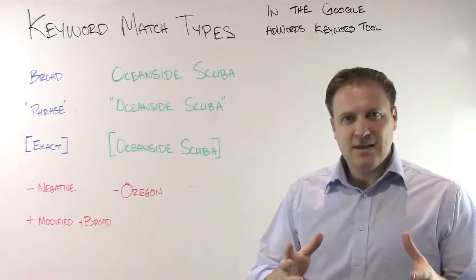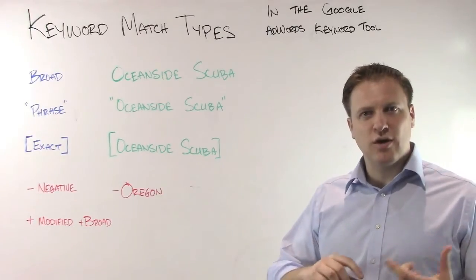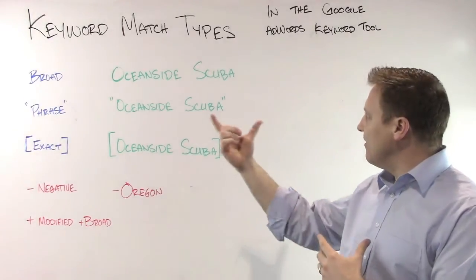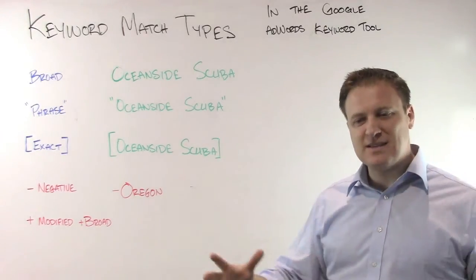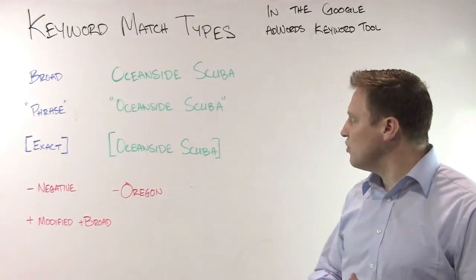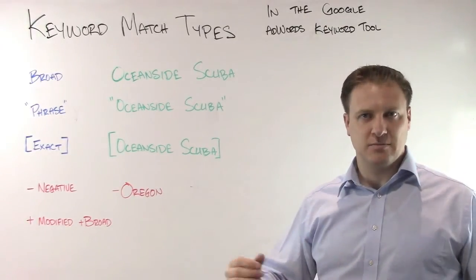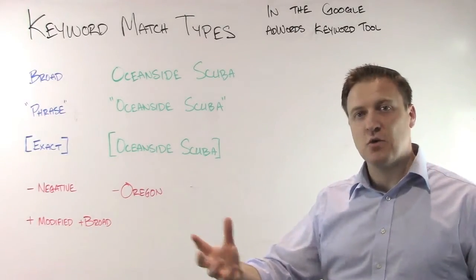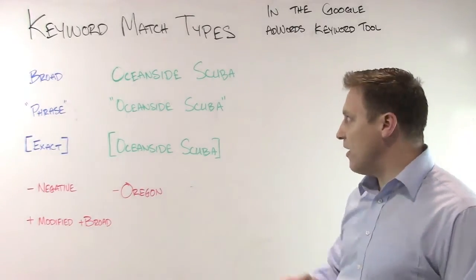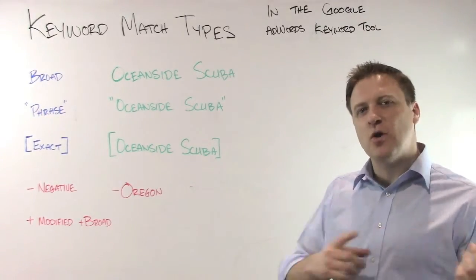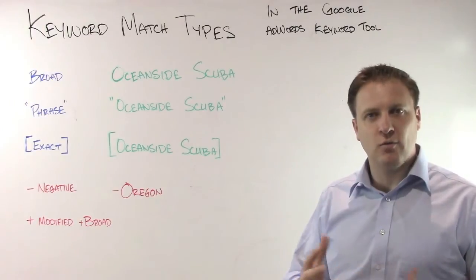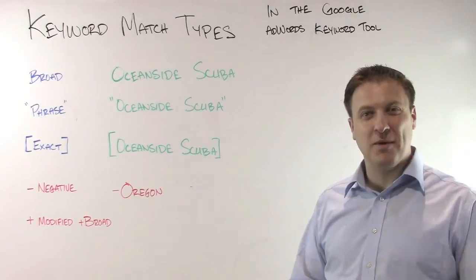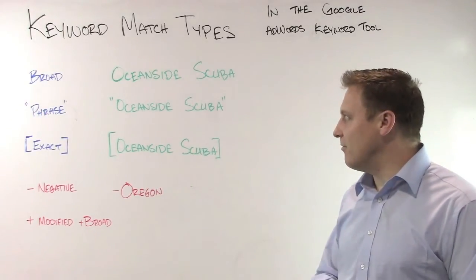Broad match is basically any combination of these words, any synonyms, any order, any individual word included in those. So if I were to type in 'Oceanside scuba' it would take into account synonyms — maybe it's Oceanside California or Oceanside Oregon. And if I own a scuba shop in Oceanside California, I probably don't want to be showing up for Oceanside Oregon ones, especially if I have to pay for those in the pay-per-click environment. And I definitely don't want to be estimating my search traffic based on those.